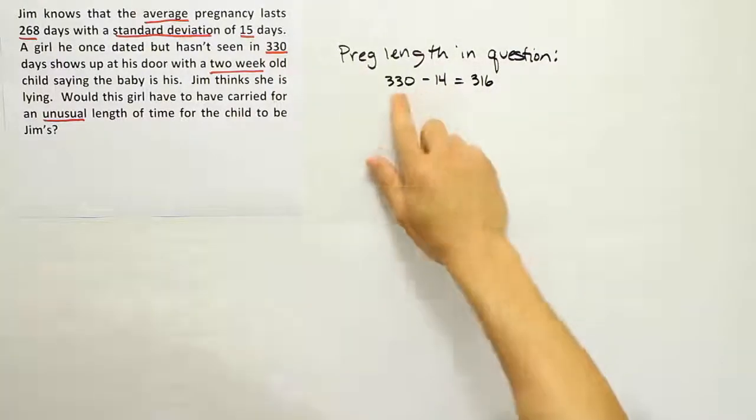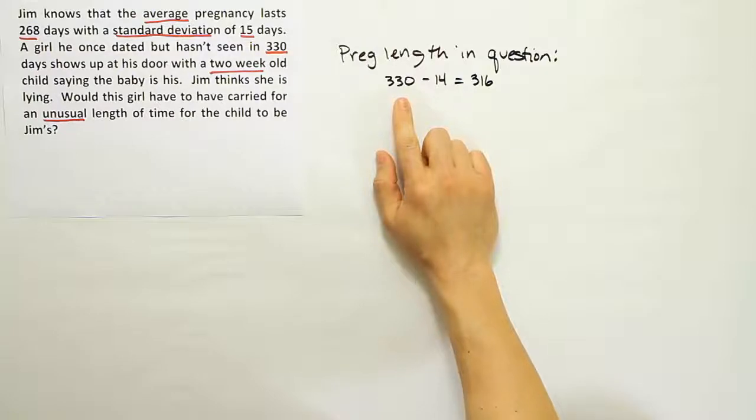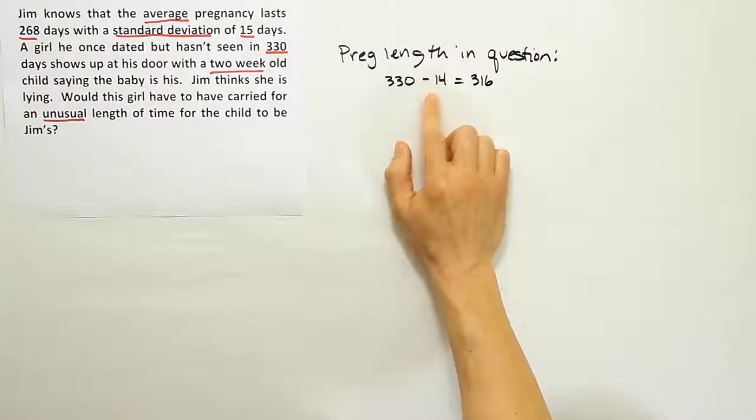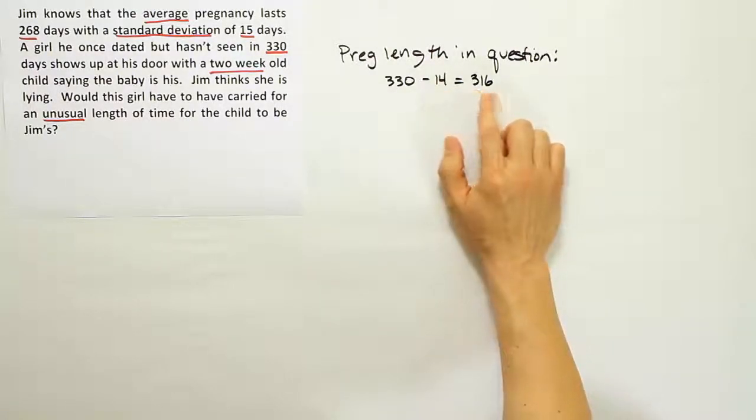Because if she had become pregnant the last time she saw Jim and the child was born just two weeks ago, then that would have been a span of 316 days.